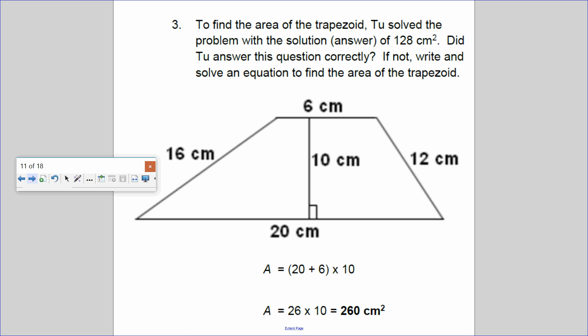Number three: to find the area of the trapezoid, Tu solved the problem with the solution of 128 square centimeters. Did Tu answer this question correctly? If not, write and solve an equation to find the area of the trapezoid. Let's see. He added the two bases, 20 and 6, then he multiplied by its height.